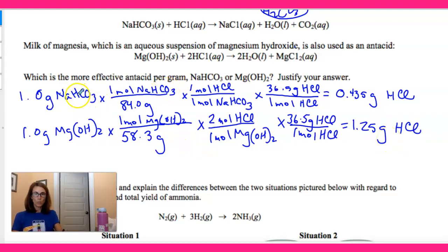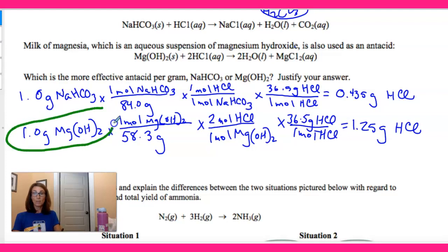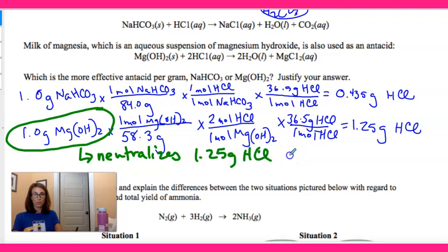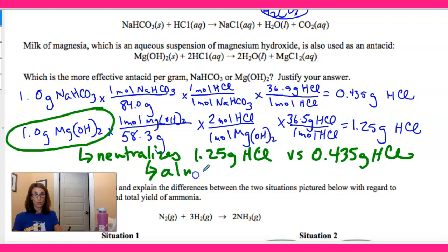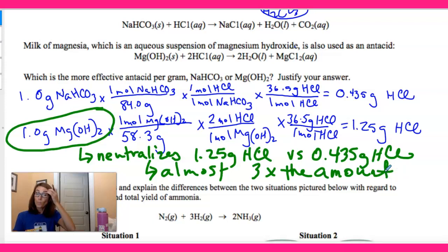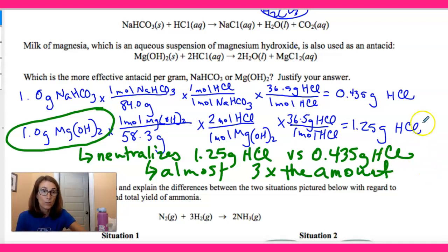So if you take a look: for one gram of sodium bicarbonate we can neutralize 0.435 grams of HCl, but for one gram of magnesium hydroxide we can neutralize almost three times that amount — 1.25 grams of HCl. So the more effective antacid per gram is magnesium hydroxide, which neutralizes 1.25 grams HCl versus 0.435 grams HCl — almost three times the amount. Use your calculations and your words to explain how your calculations justify your answer. It's important to do both.